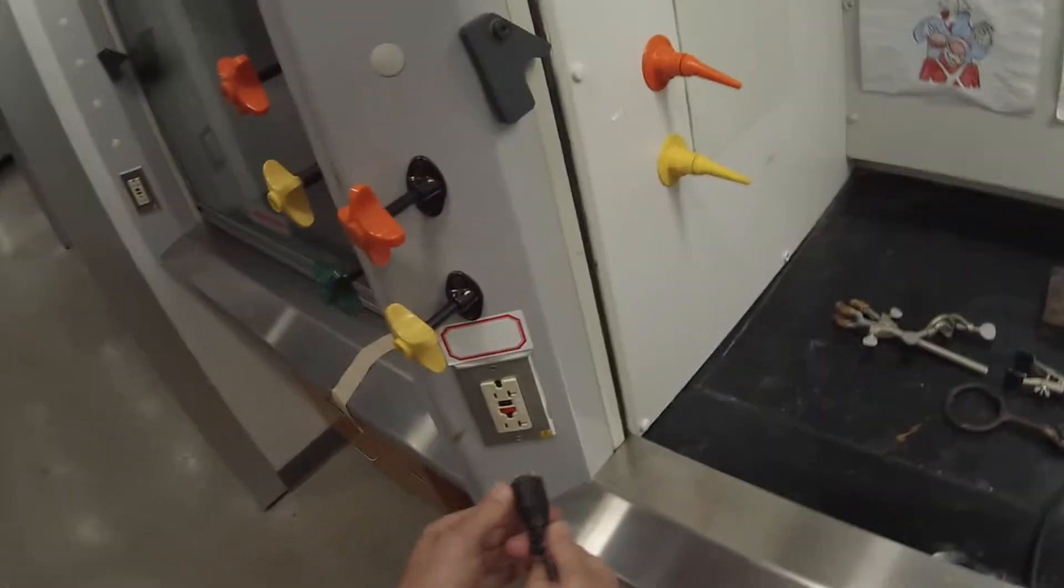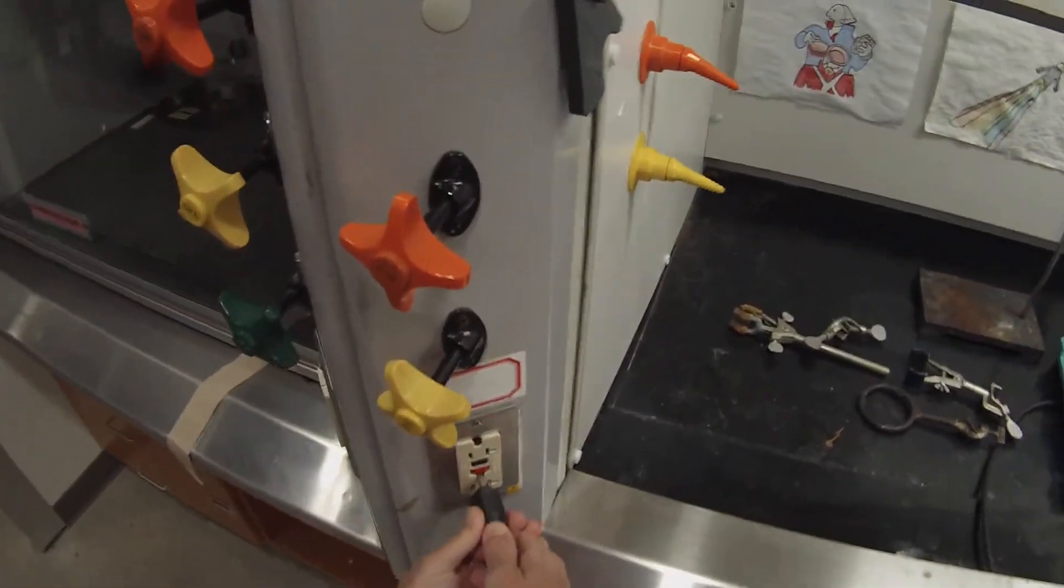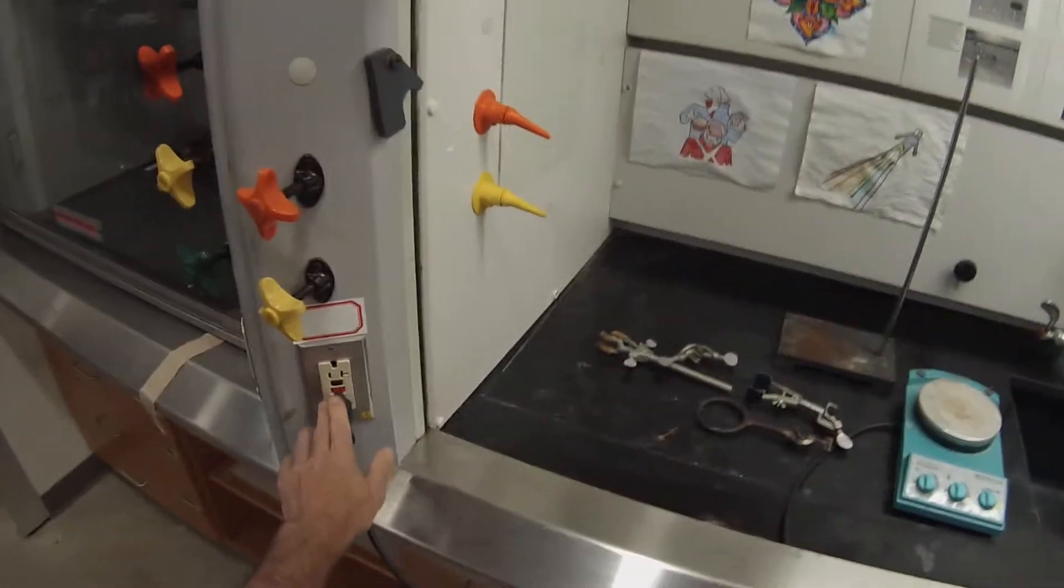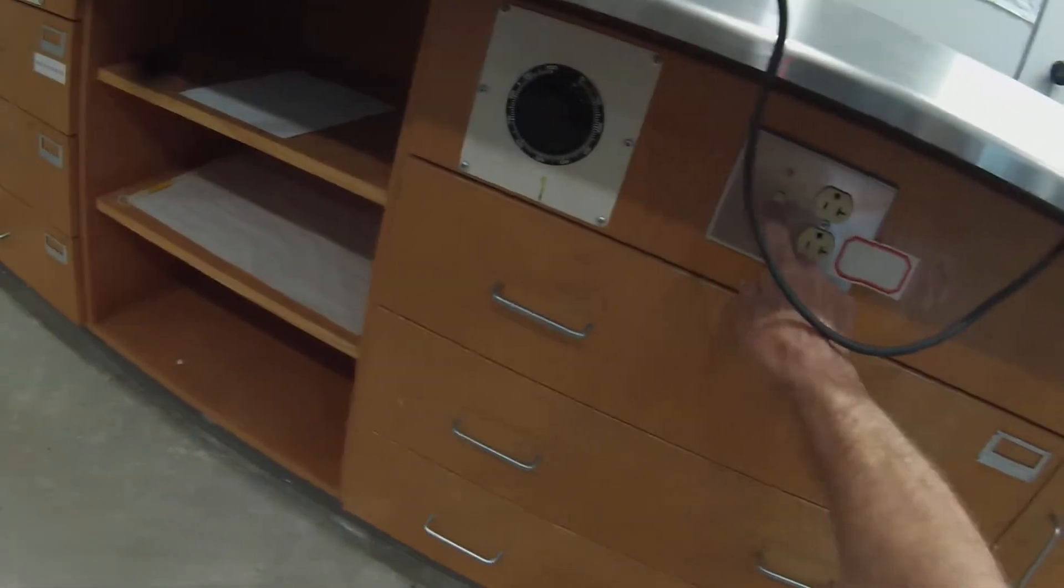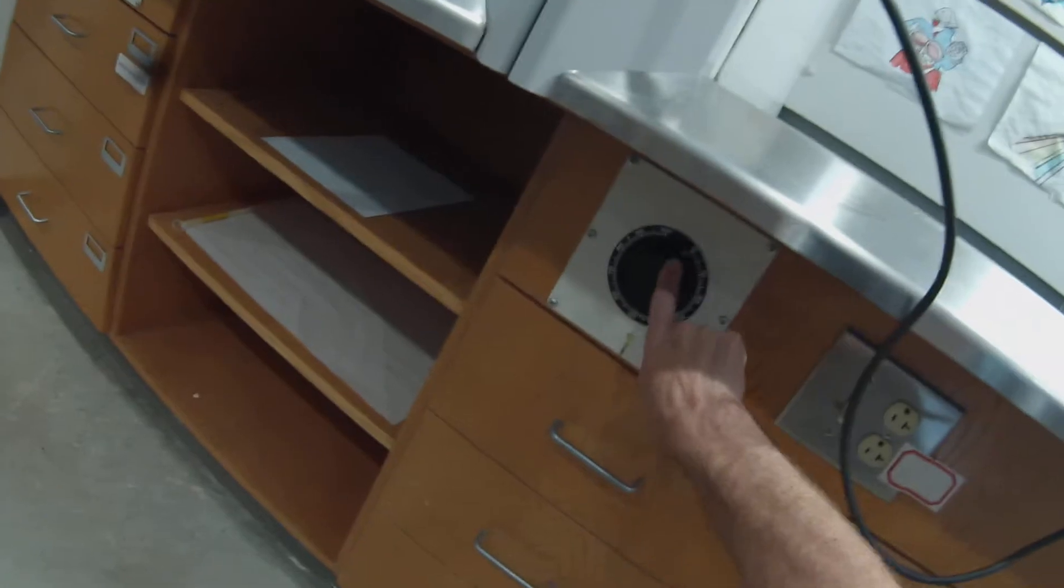This will allow us to heat and stir our material. We'll run the cord through here so it doesn't get in our way and plug that into one of these outlets. There are two different kinds of outlets in the organic hood. This one is connected directly to power, and these down here below the hood are connected with an on-off switch to a variable voltage controller that allows us to put zero through 100 percent of the voltage through.